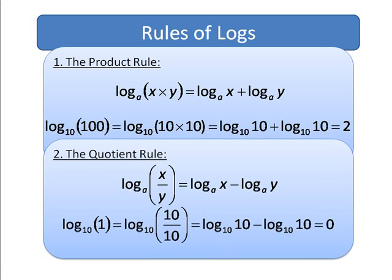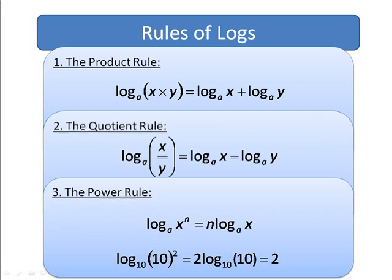The third rule is the power rule. This is a very powerful rule of logs, if you pardon the pun, and this says that log of x to the power of n is equal to n log x. So log of 10 to the power of 2 is equal to 2 log 10, so it's equal to 2. We'll use this power rule quite often, especially when we look at the kinetics example.